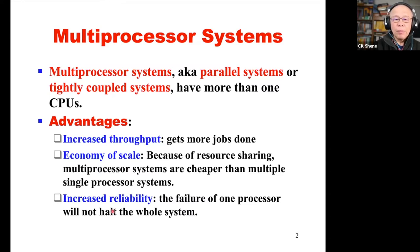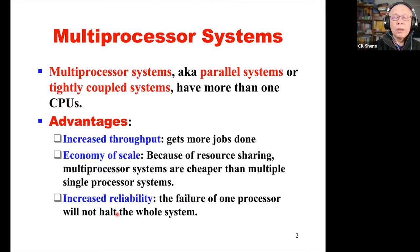And finally, increased reliability. In a single processor system, if the CPU dies, that system dies. With a multiprocessor system, if the operating system works with the hardware, it is always possible that even though one CPU dies, other CPUs can still pick up the remaining work and execute all the needed work properly, although it could be a bit slower. So these are the advantages of using a multiprocessor system.